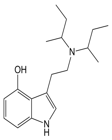4-HO-DSBT, 4-hydroxy-N,N-di-sec-butyltryptamine, is a tryptamine derivative which acts as a serotonin receptor agonist. It was first made by Alexander Shulgin and is mentioned in his book TIHKAL, but was never tested by him.